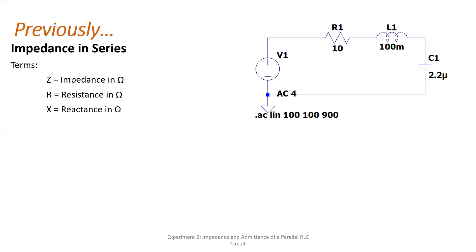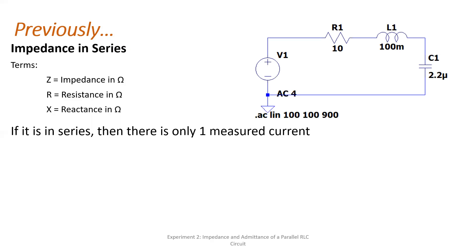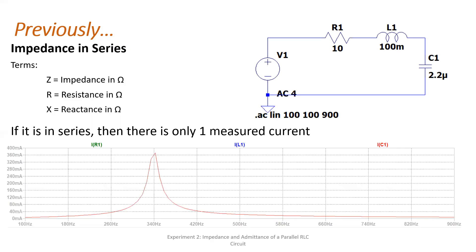Here is the circuit — we have a voltage source and a series RLC configuration. What do we expect from here? We are expecting only one measured current since this is in series. As you can see, the waveforms for the current of R1, L1, and C1 coincide — they only have one waveform for the current. That is expected since it is in series.